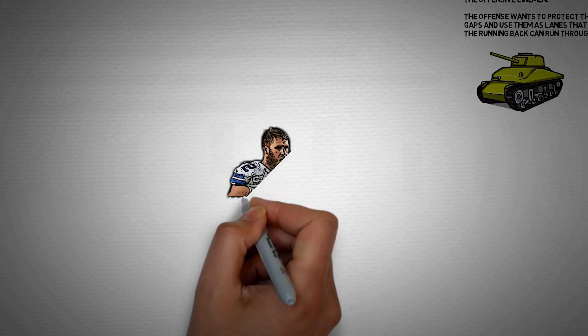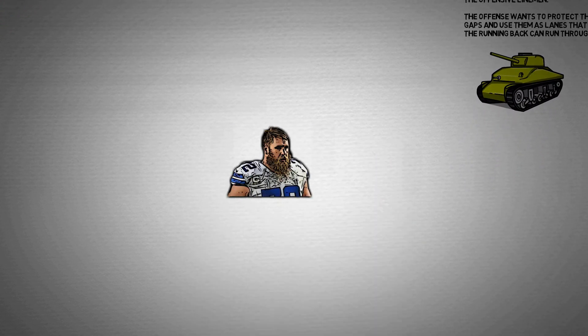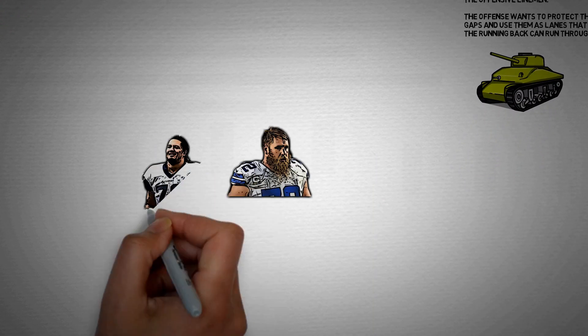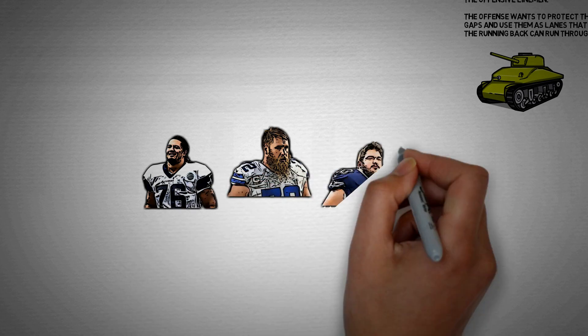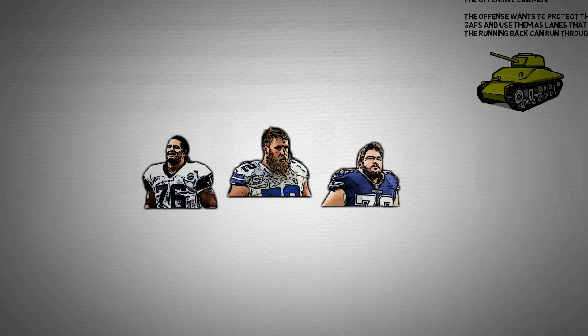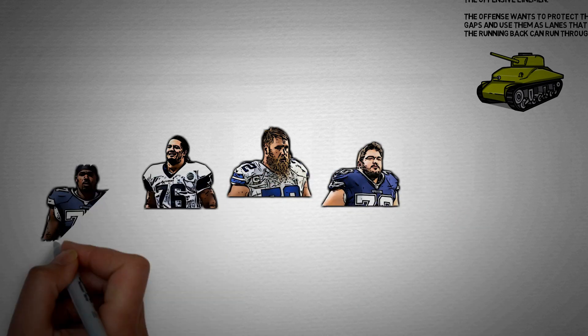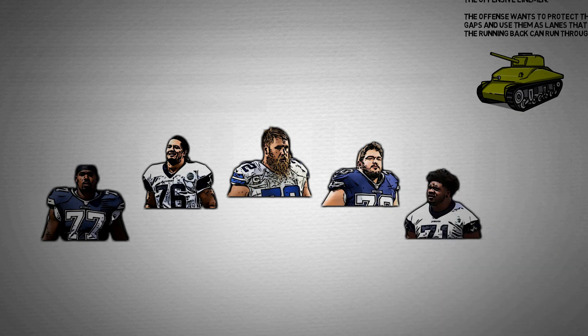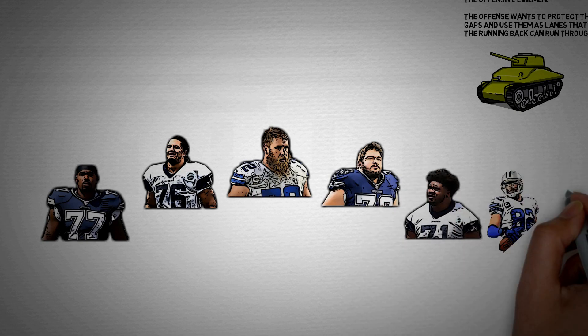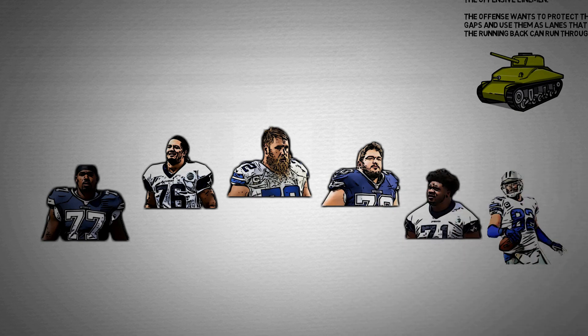We have Travis Frederick at center, Xavier Suofilo at left guard, Zach Mornin as right guard, Tyron Smith as left tackle, and Lyle Collins as right tackle, and let's use future Hall of Famer Jason Witten as tight end.